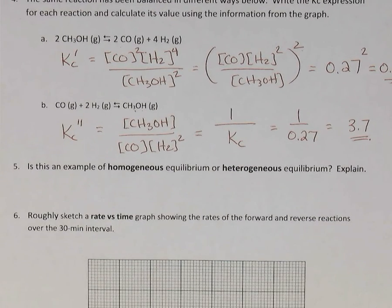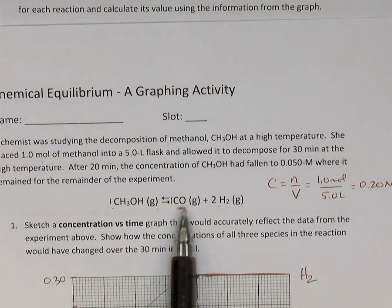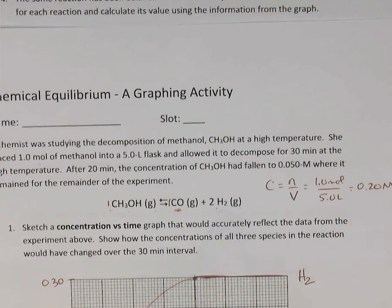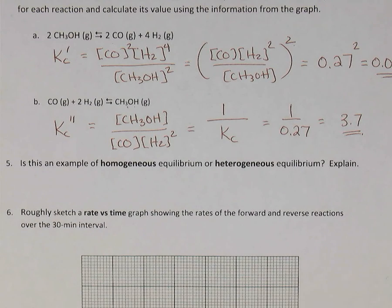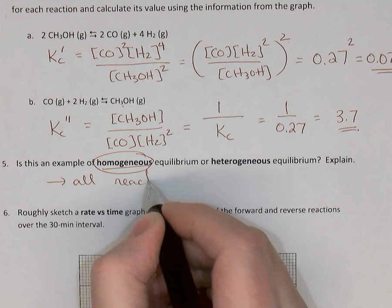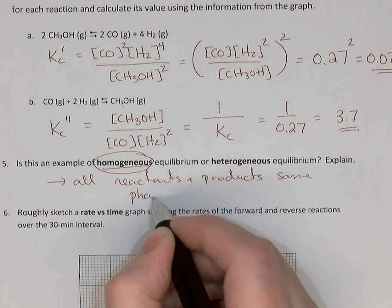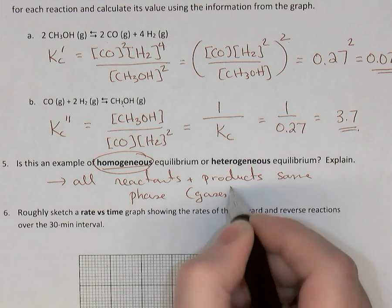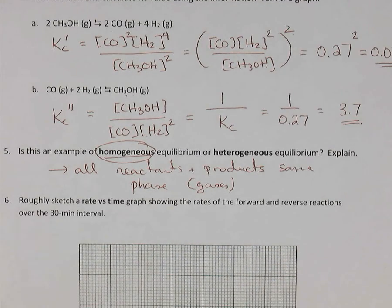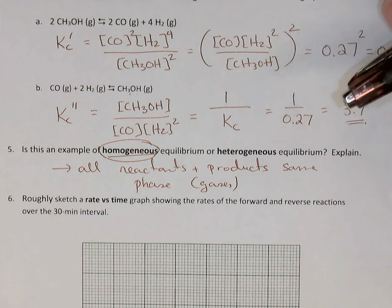Question 5 asks whether this is homogeneous or heterogeneous equilibrium. Looking at the original balanced equation, all species are in the gas phase — they are all the same phase. When all reactants and products are the same phase, whether all gases or all aqueous, it is a homogeneous equilibrium. If one species had been a solid or liquid, it would be a heterogeneous equilibrium.